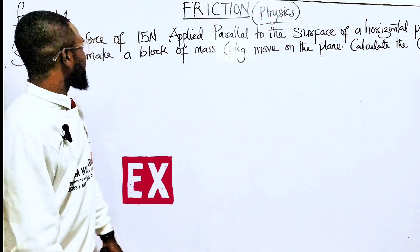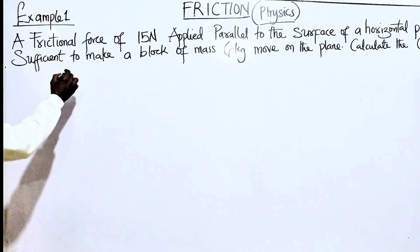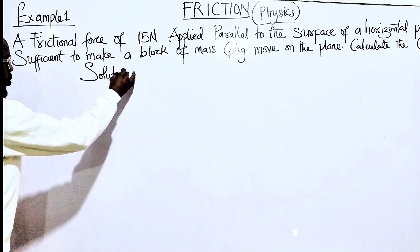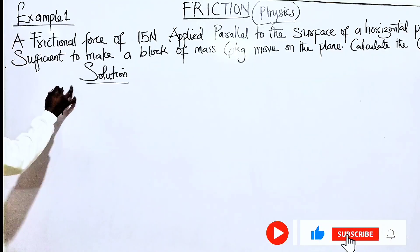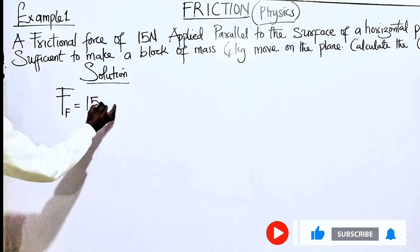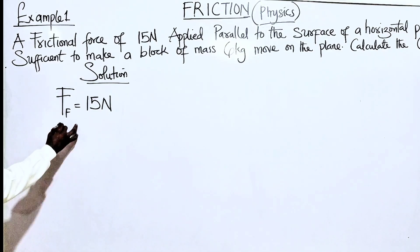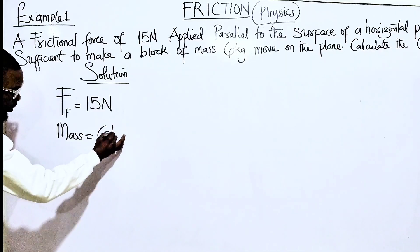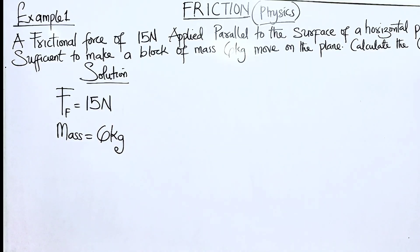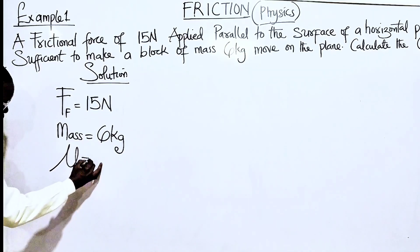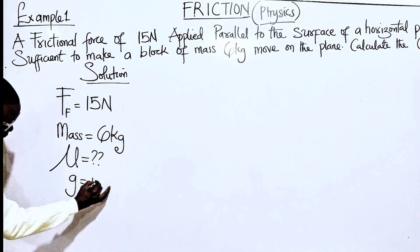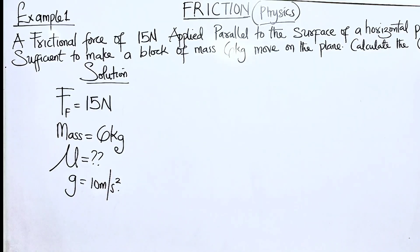Example 1: A frictional force of 15 Newtons applied parallel to the surface of a horizontal plane is just sufficient to make a block of mass 6 kilograms move on the plane. Calculate the coefficient of friction, given that g = 10 m/s². Parameters: frictional force = 15 N, mass = 6 kg.